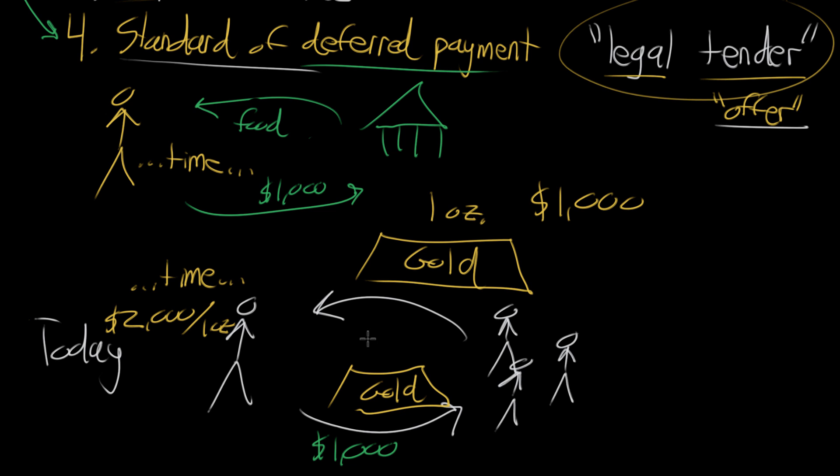But in effect, what this would mean is that you're paying back half an ounce of gold. Because after this time has passed, the dollar has devalued relative to gold, and instead, $1,000 would only buy half an ounce of gold. And you might imagine people would be kind of unhappy about that.